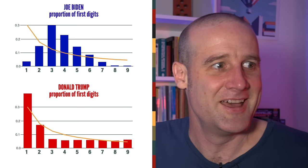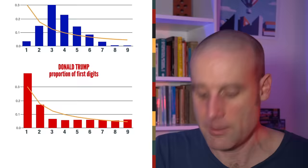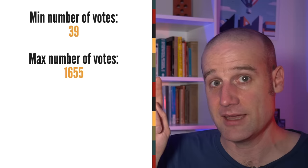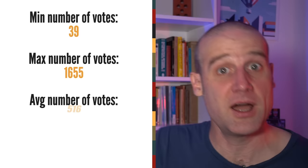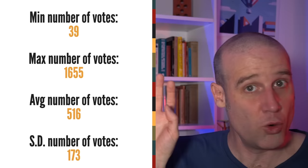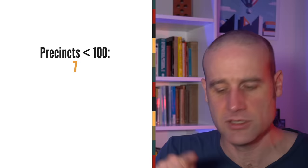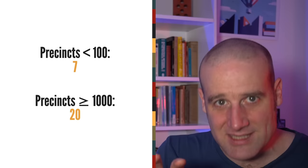But then I looked at the sizes of the precincts. And they're, I mean, they're picked to be roughly the same population each. So it shouldn't be that surprising when you realise they're all about the same size. The smallest one had a mere 39 votes cast in it. The biggest one had 1,655. The average, however, was about 500. It was 516. And the standard deviation is super tight. They're all clumped roughly around the middle. There are only 7 precincts which had fewer votes than 100. And there were only 20 precincts which had 1,000 or more votes.